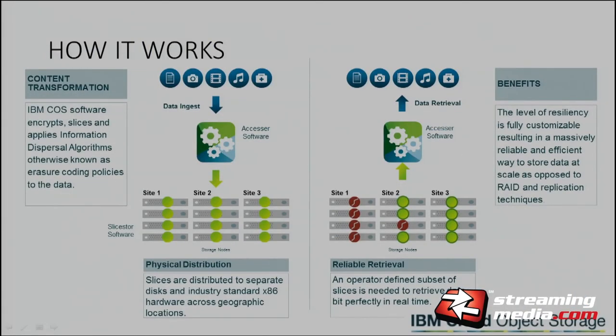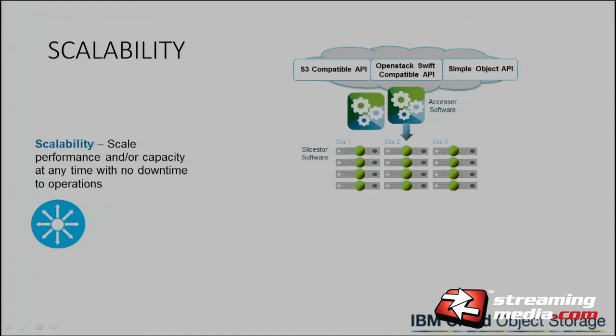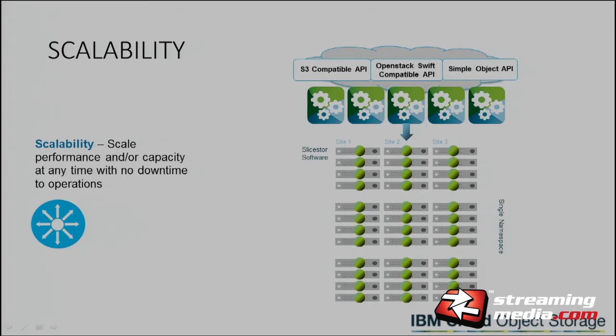How it works: your data comes in to the accessor, which slices it up. We use a 12-wide — basically 3x4 — configuration, and we can actually lose 5 out of 12 slice stores and still be in operation. The mathematical coding is like algebra: if you had 5 equations and 5 unknowns you could uniquely solve them. We give you 8 equations with 5 unknowns — that's how we achieve 10 nines of availability. We can start small, then add accessors and more storage while the system is online and live. We can even do software upgrades while the system is running and never skip a beat.